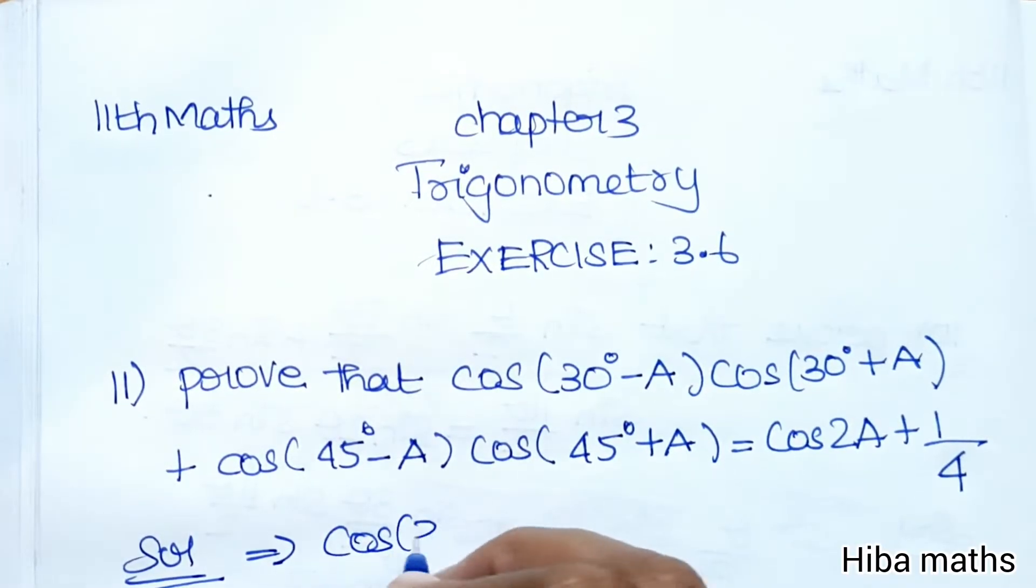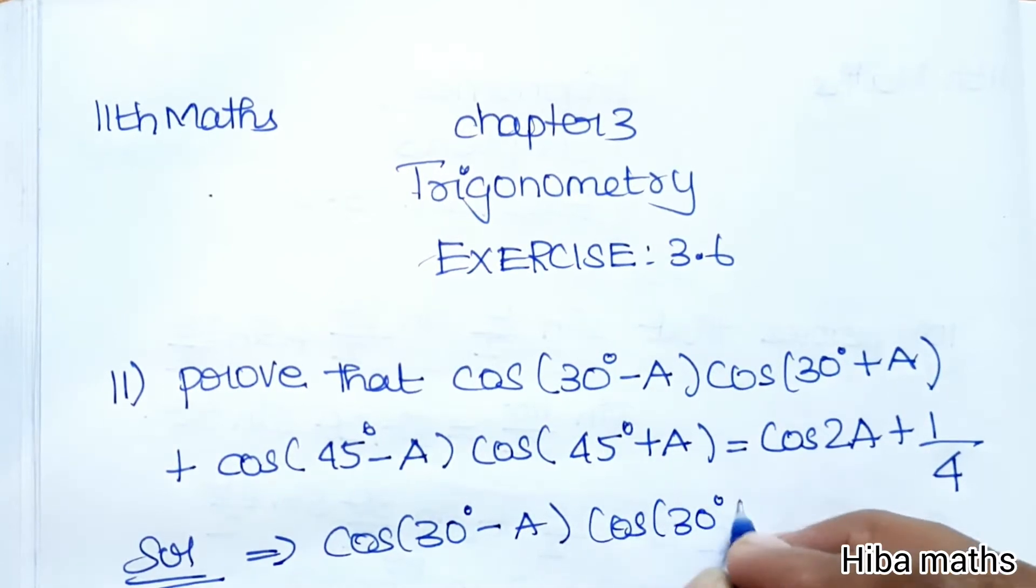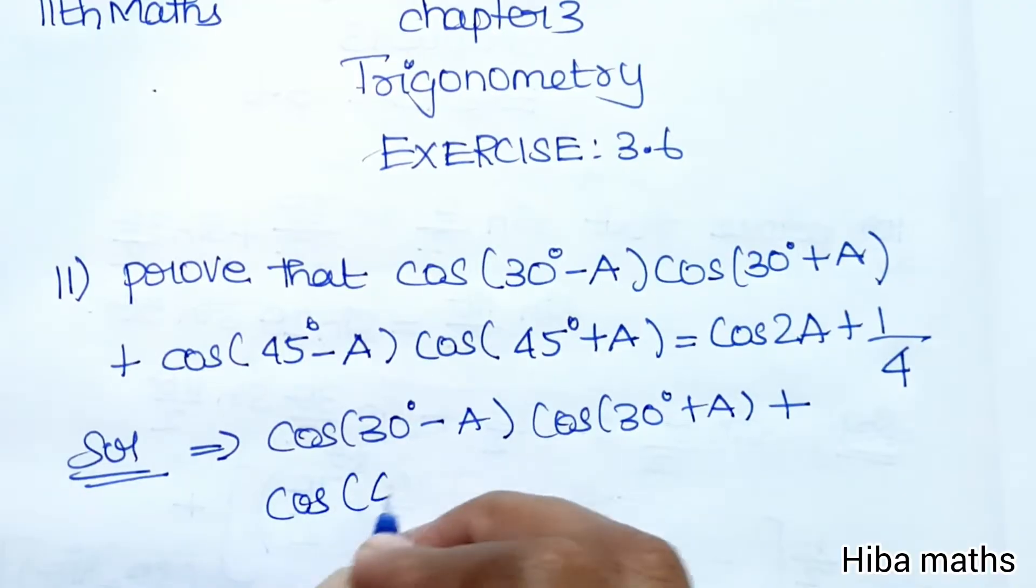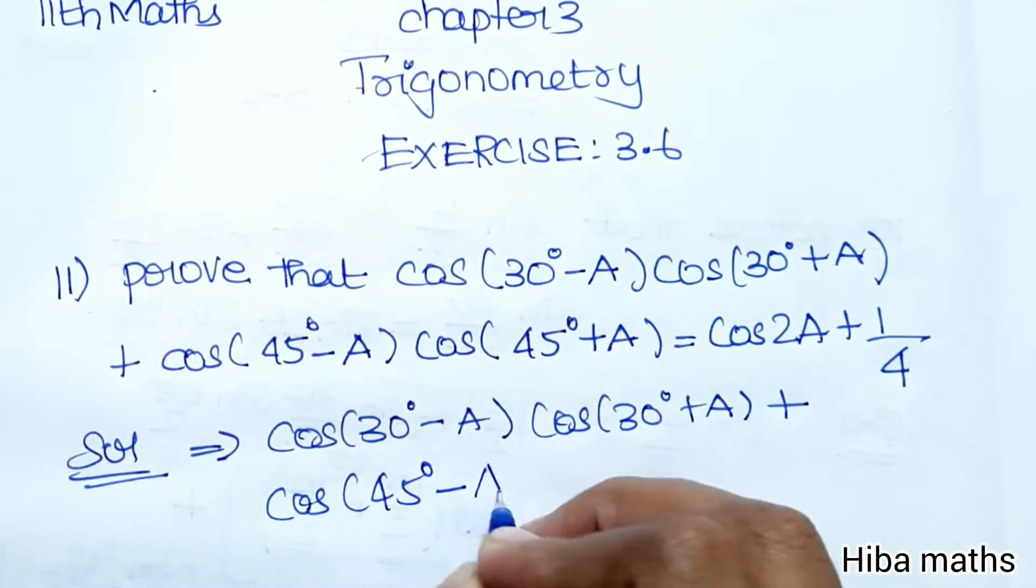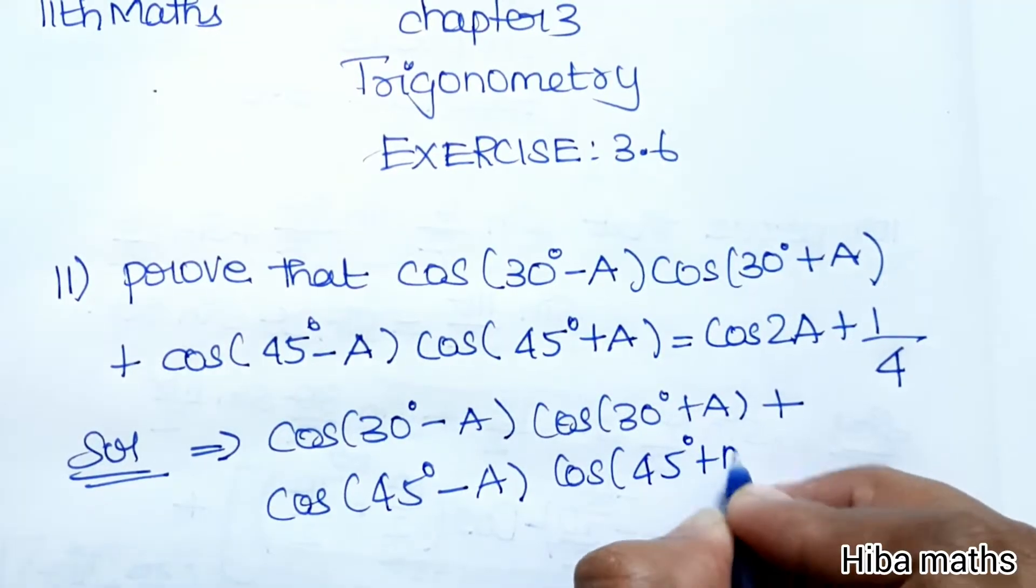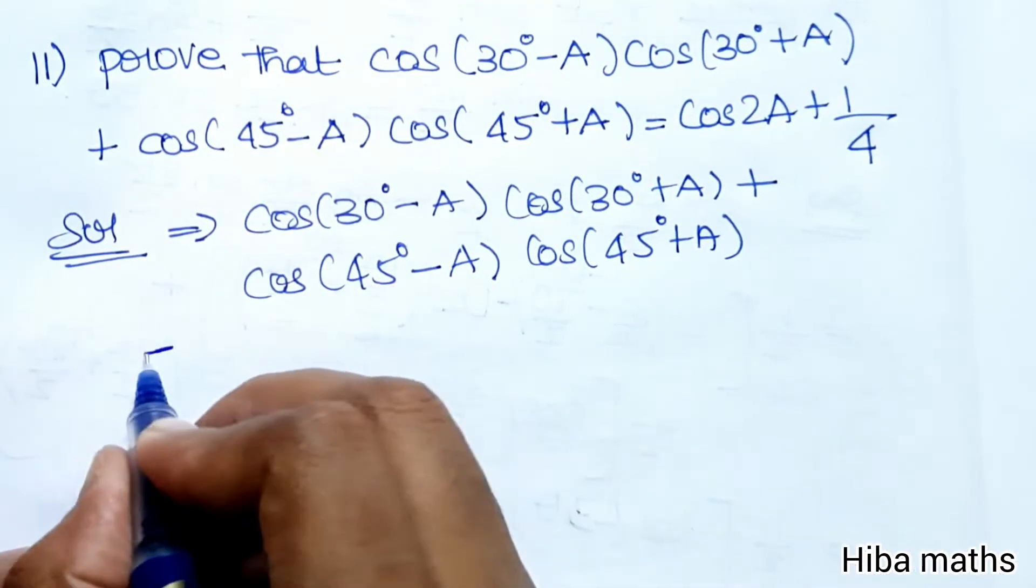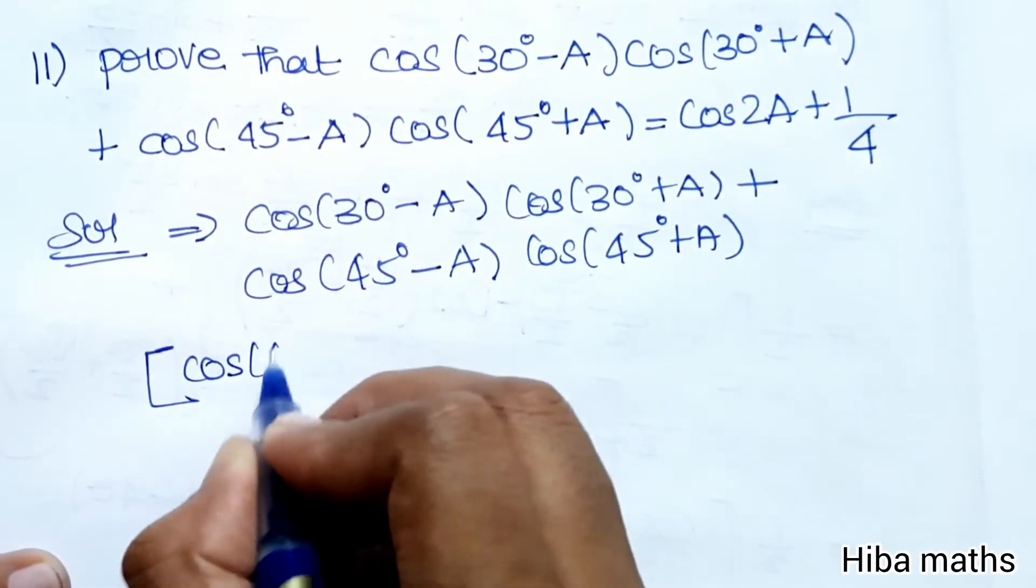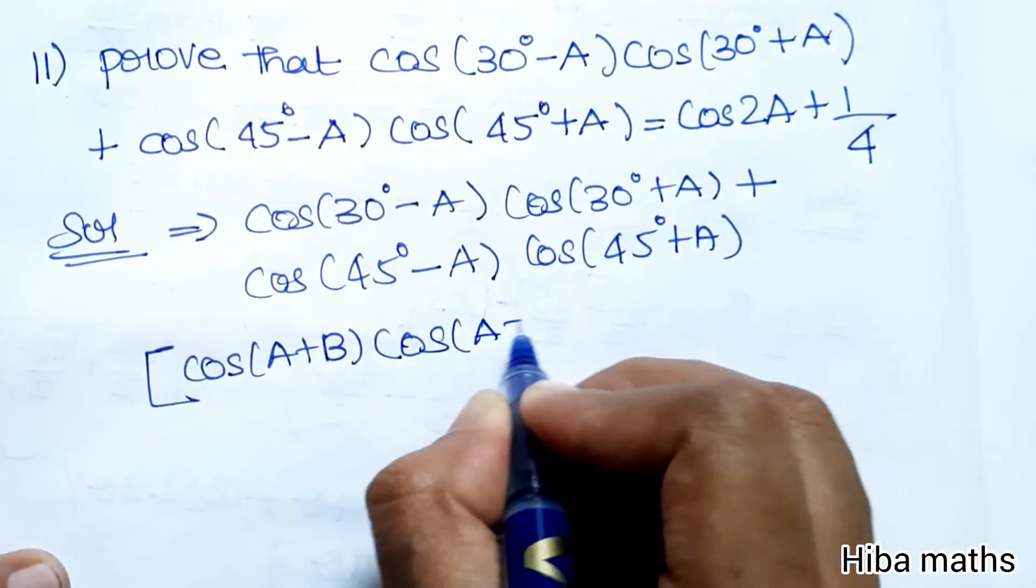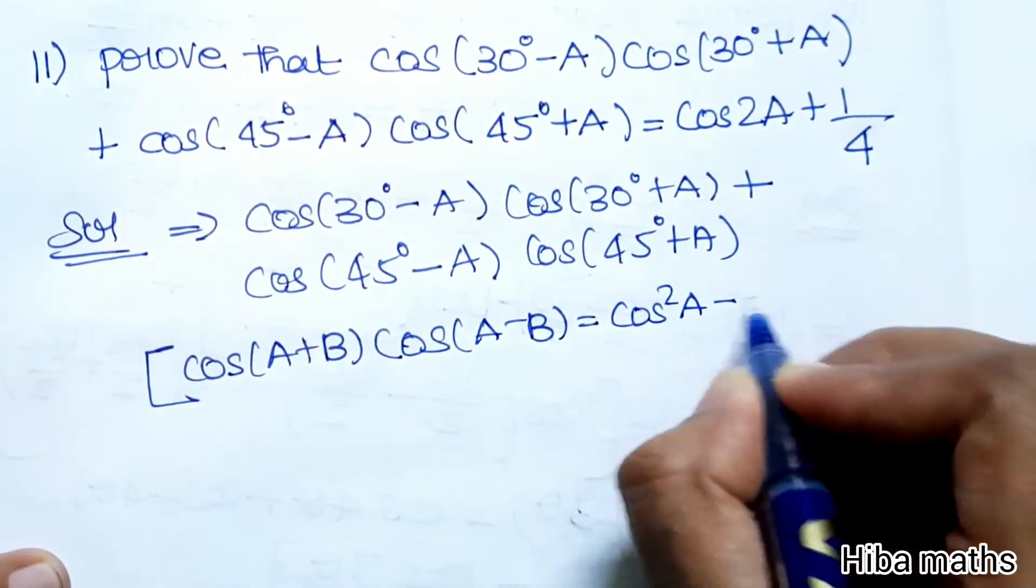LHS is equal to cos(30° - A)cos(30° + A) + cos(45° - A)cos(45° + A). So if we solve this, we will use the identity cos(A + B)cos(A - B), because cos(A + B)cos(A - B) is equal to cos²A - sin²A.